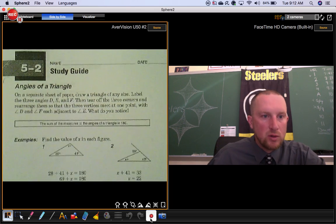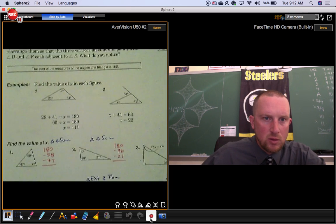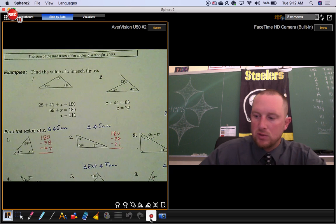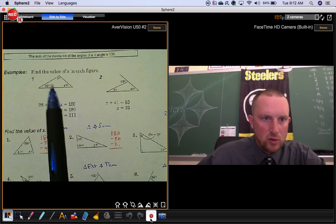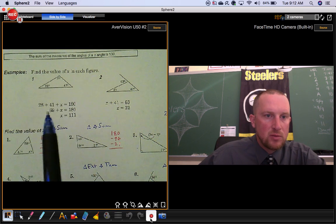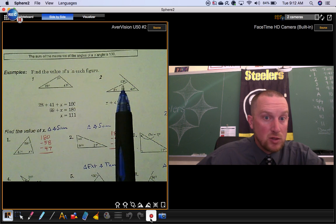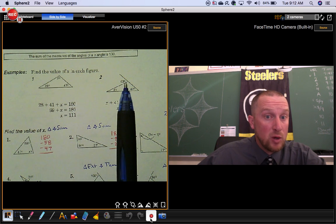For section 5.2, it gives you some examples where they use the triangle angle sum theorem—the three angles of a triangle add up to 180. They also use the triangle exterior angle theorem, where if you have an exterior angle, it's equal to the sum of the two remote interior angles.